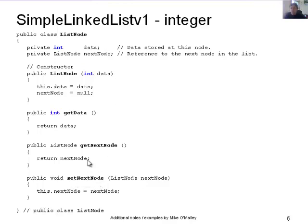There's also a getNextNode method that returns the object reference for the next node in memory — or null if there isn't one — and a setNextNode mutator method that takes in a ListNode and sets the class's next node equal to the one passed in. The key thing here is that the class has an object that refers to itself, so we can join objects together to create a list that grows and shrinks as needed.